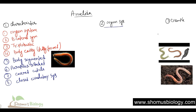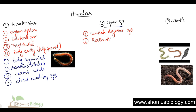Now let's talk about the different organ systems they have. First, they have a complete digestive system. Second, they have a respiratory system as well. They perform respiration with the help of their skin, gills, and even parapodia.